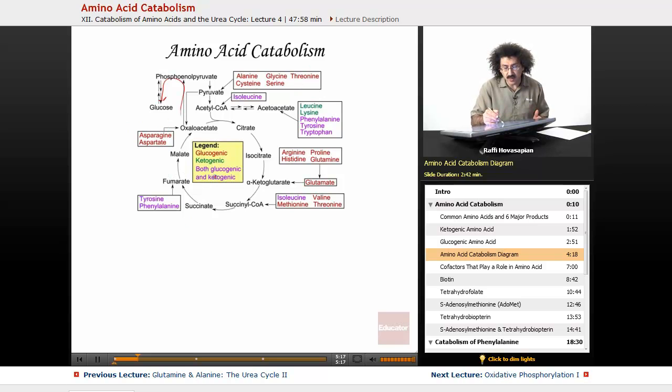Notice the ones in green, those are strictly ketogenic. Leucine and lysine are strictly ketogenic. When they break down, they break down to acetoacetate, acetyl-CoA, and then they will go on to form ketone bodies.